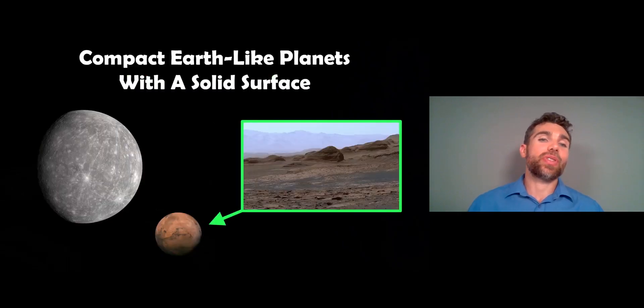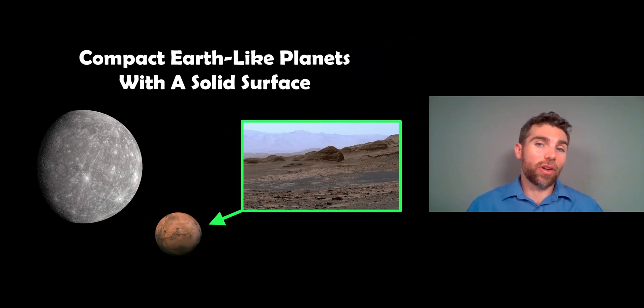So these planets are compact and they're earth-like. That's basically the gist of it. They have a solid surface that you can stand on. So here you've got Mercury and Mars. They have a solid surface and they can be considered earth-like in comparison to other planets that are nothing like Earth.